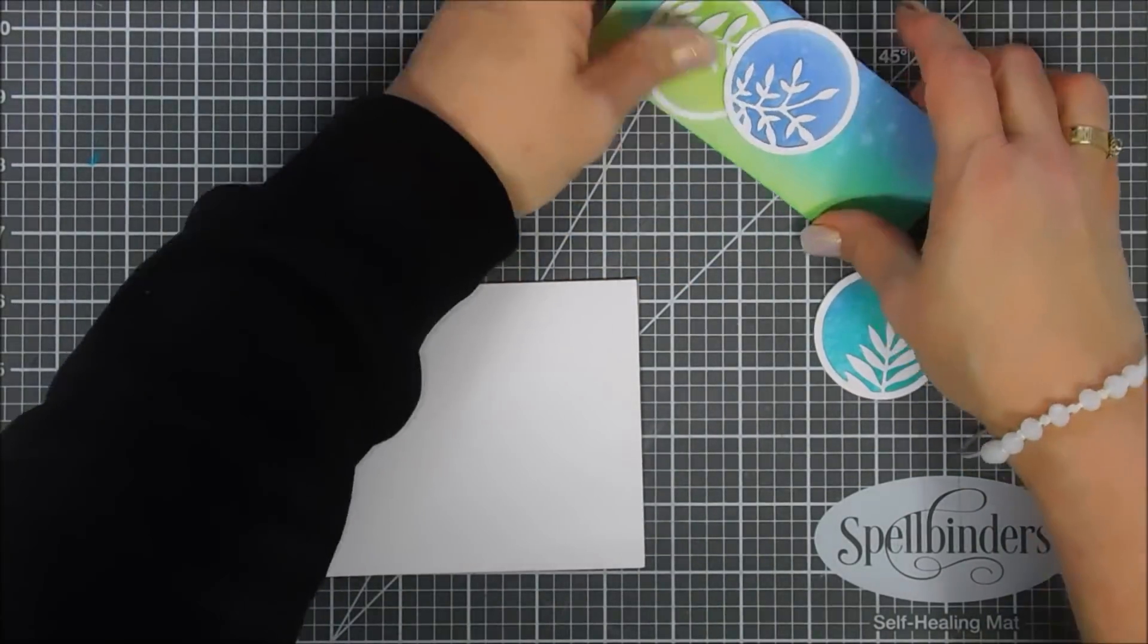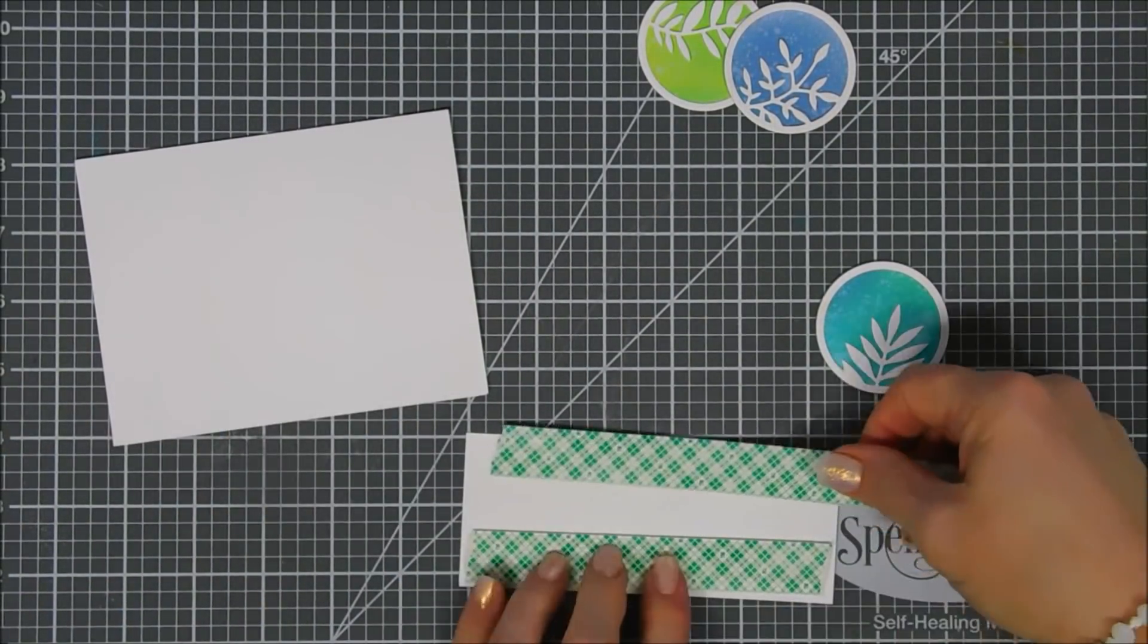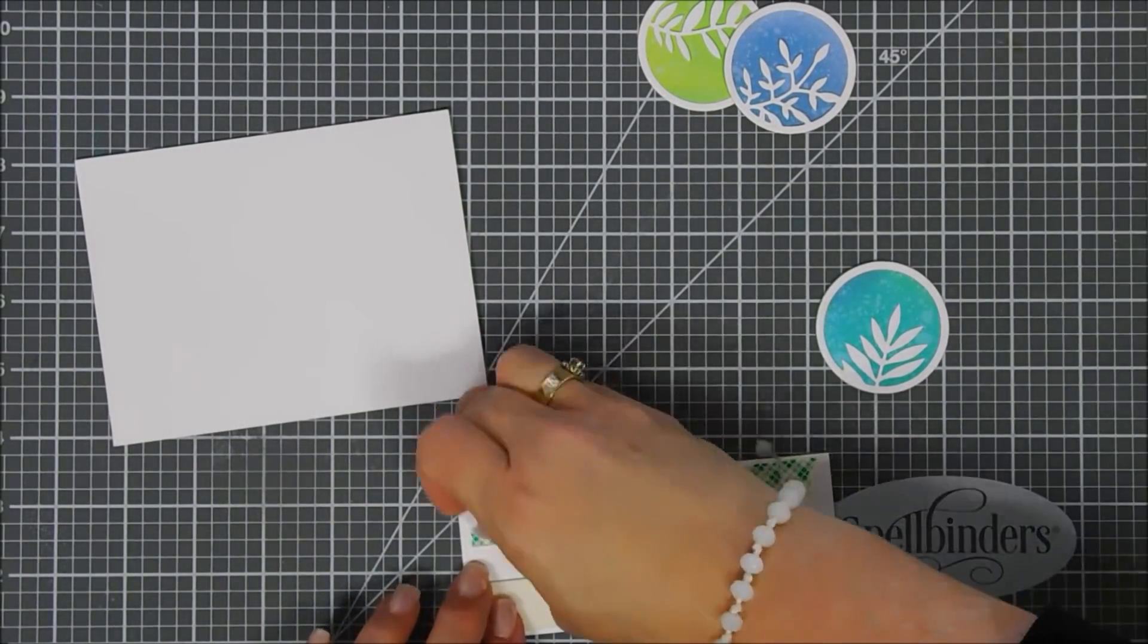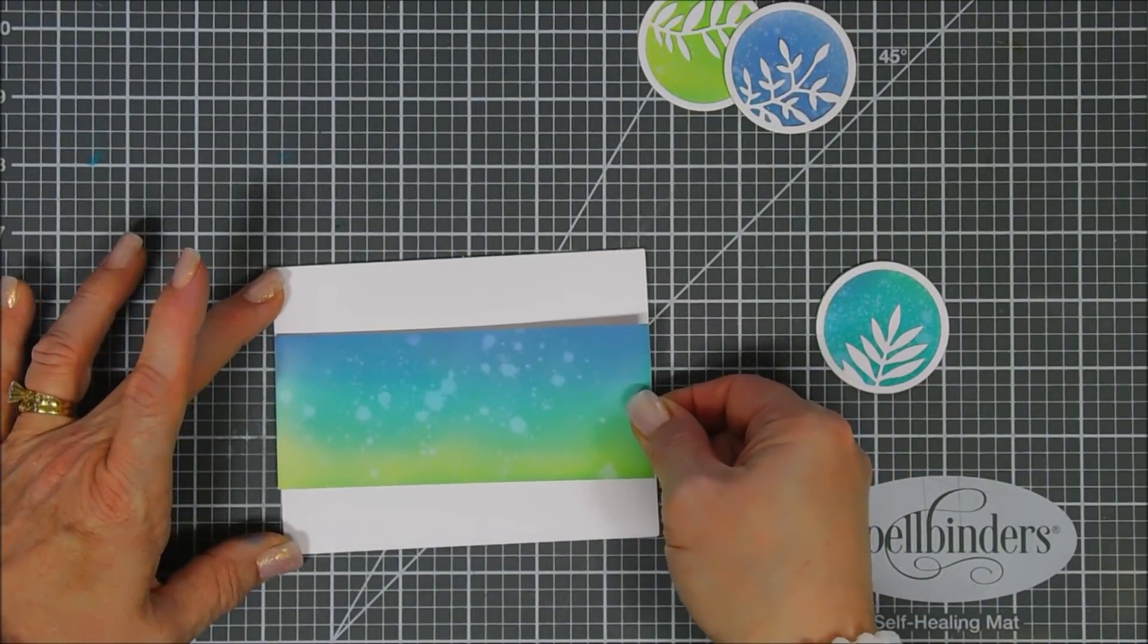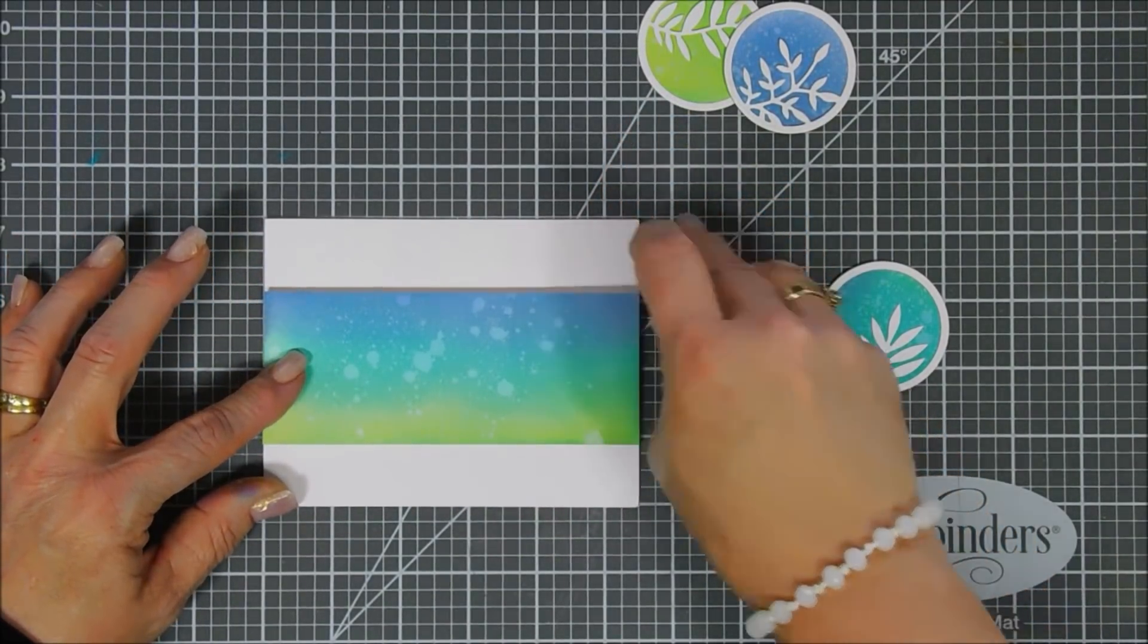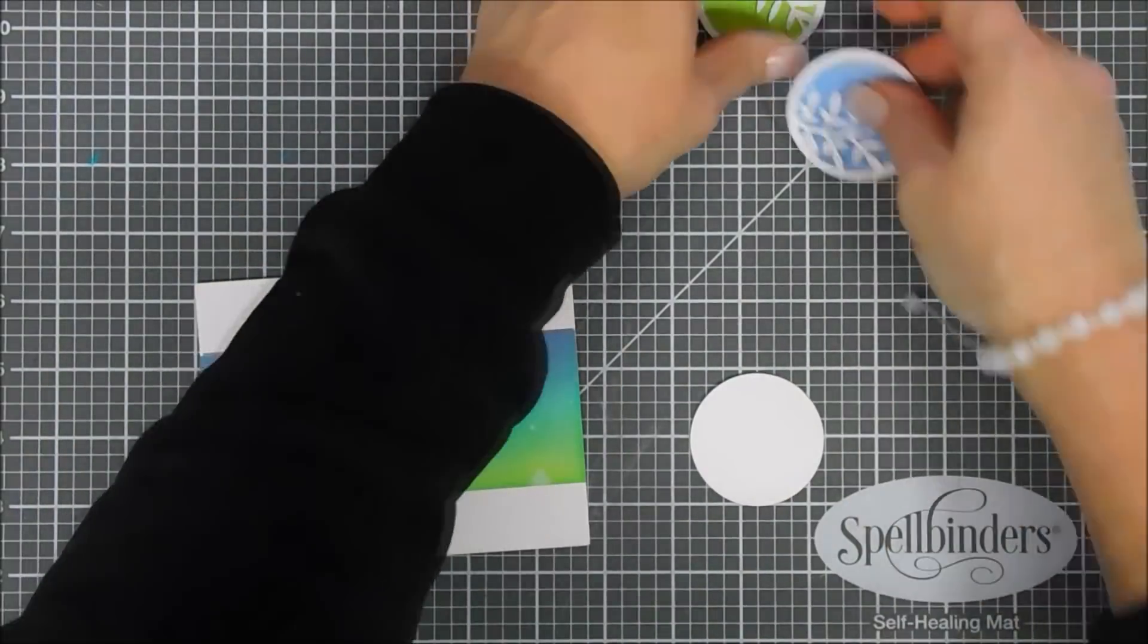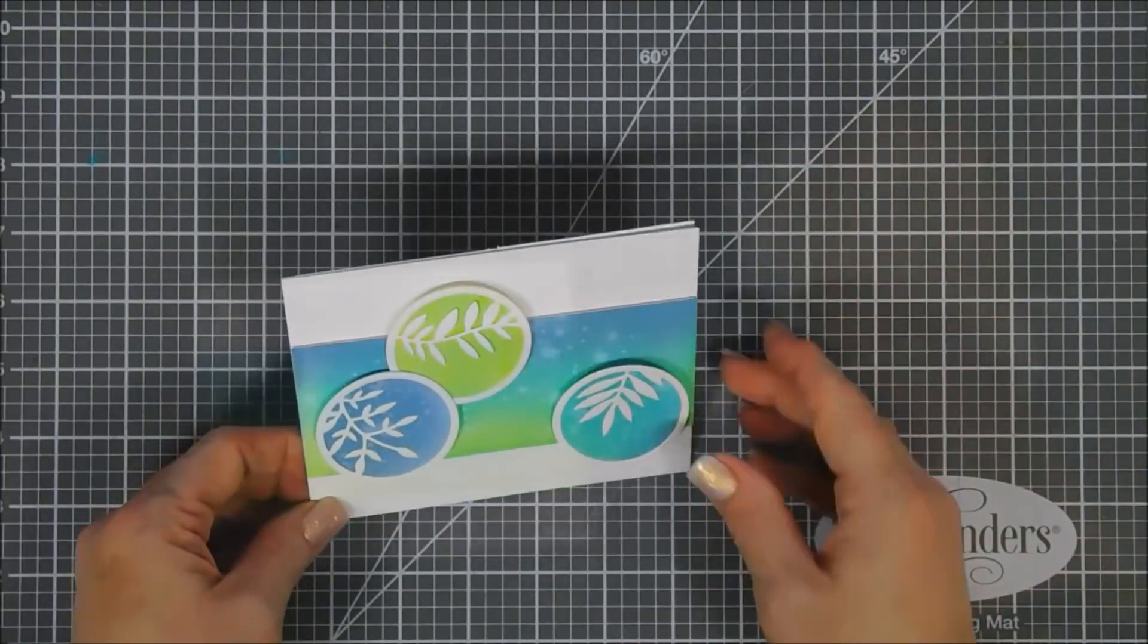Now for card number two, we're going to make a landscape style card. So we're going to start off by adding foam adhesive behind this panel. This panel I trimmed down. So it's two and a quarter inches in width, but it's the length of my card base. We're going to use the grid lines on our mat to make sure it's straight because I probably would get them crooked. Once this is adhered, we're going to add foam adhesive behind each one of these circles. And then we're going to add them.